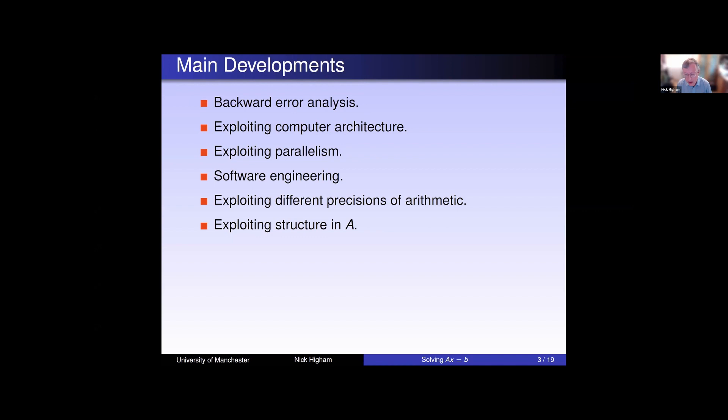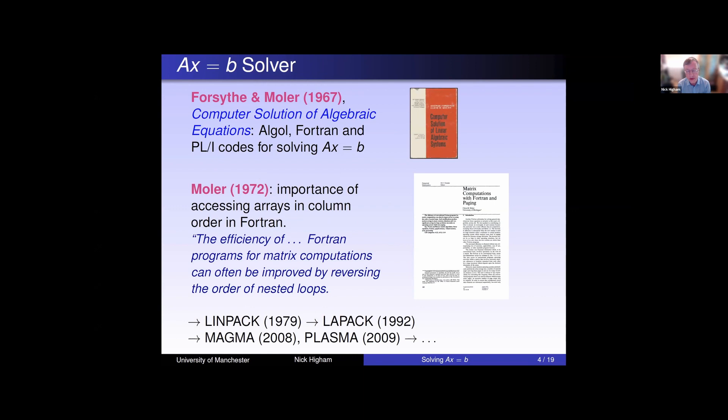Let me pick out one or two examples of the things that have happened with particular emphasis on areas to which Jack has contributed. First, let's look at the classic x equals b solver, like backslash in MATLAB. There was a book by Forsythe and Moler in 1967, which listed programs for an x equals b solver based on LU factorization, given in both Algol and Fortran and also a language called PL/1. This book's famous for having these programs in it.